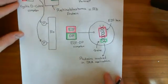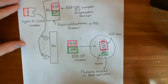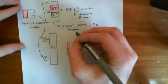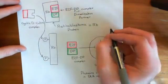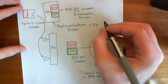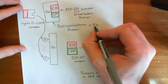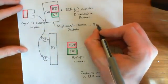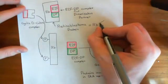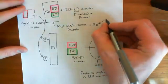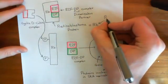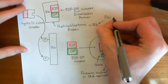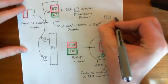The retinoblastoma protein is an example of what is known as a tumor suppressor gene — or rather, the gene that codes for retinoblastoma protein. So RB is the protein, and the gene which codes for retinoblastoma protein is the RB1 gene.